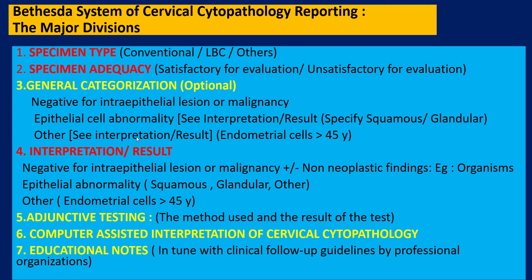However, general categorization can be extremely useful in grouping cases into three major categories, which can come in handy if your system is integrated with a laboratory information system or you are trying to use the records for statistical analysis. For adjunctive testing, for example HPV testing, and computer-assisted interpretation — only in labs which use computer-assisted techniques to screen — you have to mention that you are using computer-assisted interpretation. Educational notes allow you to put a comment regarding further management of the patient.